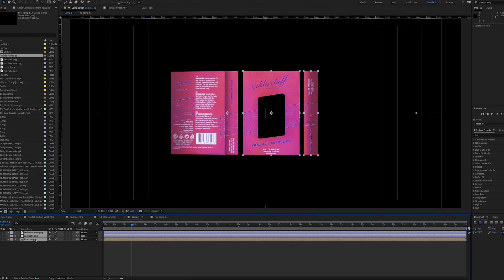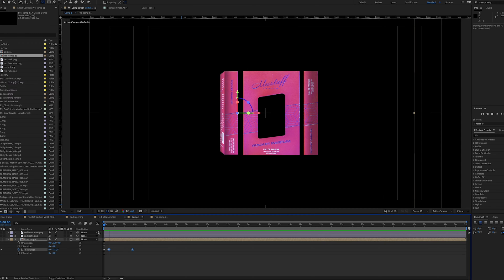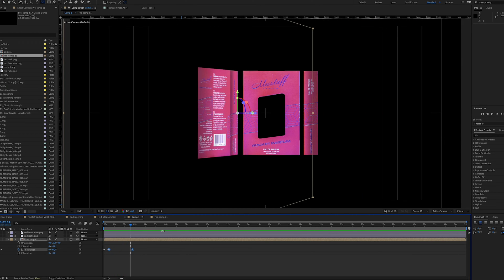The next step is to make all the layers 3D even the pre-composed one. The reason why I pre-composed the two images is because I want to animate it as one object with an animation in it.